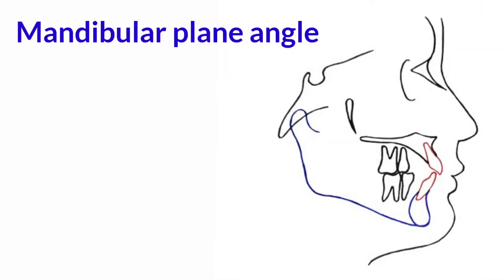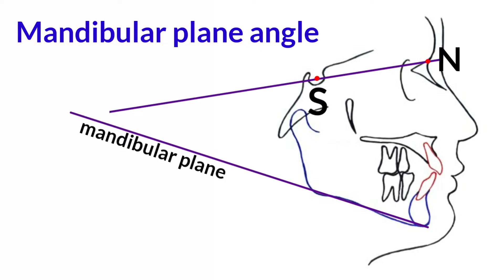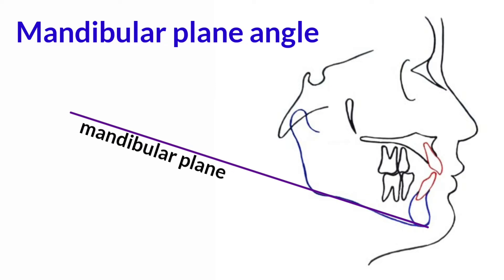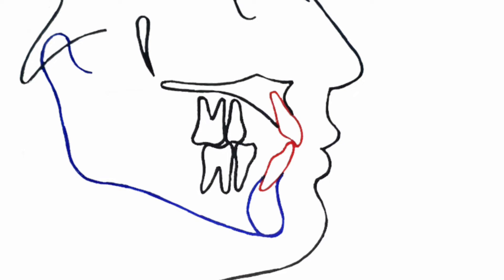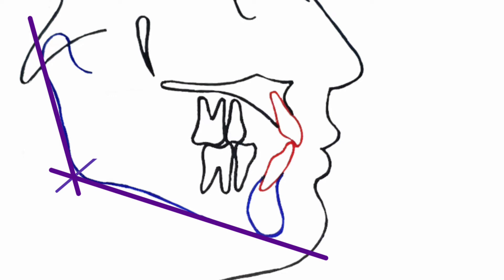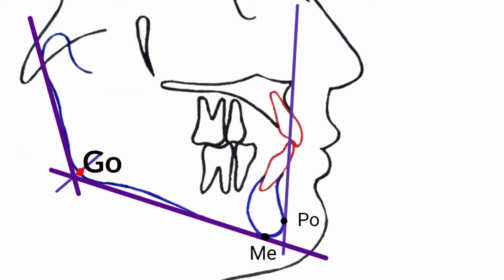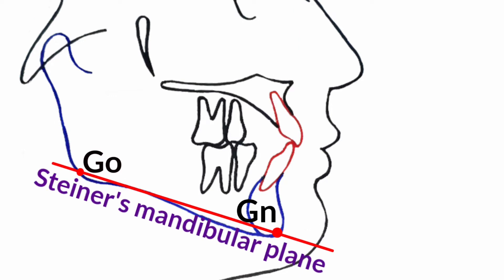The mandibular plane angle is made from the mandibular plane and the SN line. Steiner's mandibular plane is a line from gonion to gnathion. Gonion is located by two tangents: one on the inferior border of the mandible and the other to the posterior border of the ramus; the bisection of these two lines projected on the mandibular corner is point gonion. Menton is the lowest point of the symphysis of the mandible. Pogonion is the most anterior point on the symphysis of the mandible. Gnathion is located by taking the midpoint between pogonion and menton.